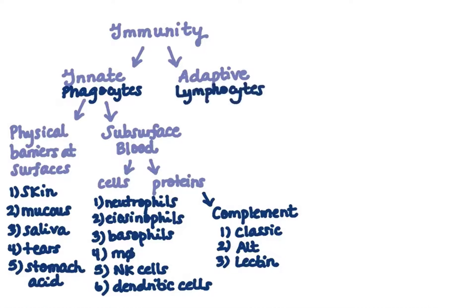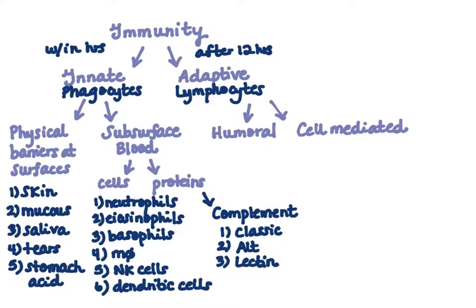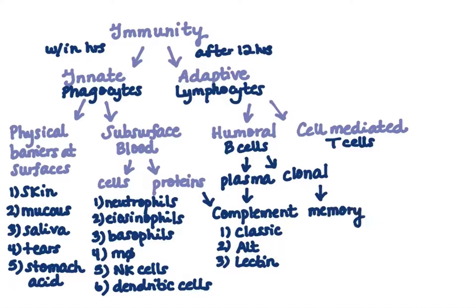To back up a little: these cells are all phagocytic cells, part of your innate immune system, that act within hours of a pathogen invasion. Your adaptive system, by contrast, has lymphocytes that act after 12 hours. These act through the humoral and cell-mediated immune systems. Your humoral system uses B lymphocytes — B cells can be plasma cells that work with the complement system, or clonal cells that make memory cells.